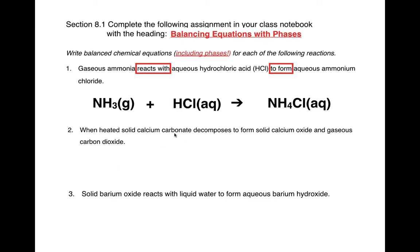Number two: When heated, solid calcium carbonate decomposes to form solid calcium oxide and gaseous carbon dioxide. Let's break it down. First thing: solid calcium carbonate. You need to find out the formula for calcium carbonate. It's an ionic compound, use your ions list. Calcium's your cation, carbonate's your anion. Both have a charge of two - positive two, negative two. So you just put them together and it says it's solid, so we'll put an S there.